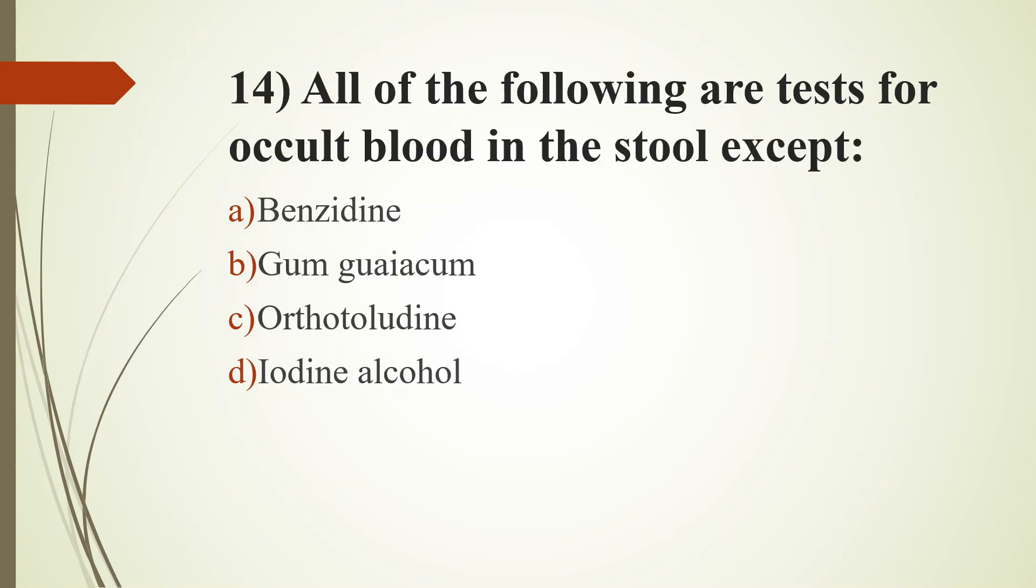13th question. At a given temperature, the speed of sound in moist air compared to that in dry air is: option A, less; option B, more; option C, same; option D, none of the above. Answer is option B, more. 14th question. All of the following are tests for occult blood in the stool, except: option A, benzidine; option B, guaiacum; option C, orthotoluidine; option D, iodine alcohol. Answer is option C, orthotoluidine.